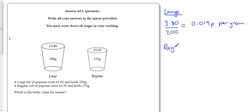If I do the regular, the same calculation, the cost £3.50 divided by 175, that comes out exactly as 0.02 pence per gram.